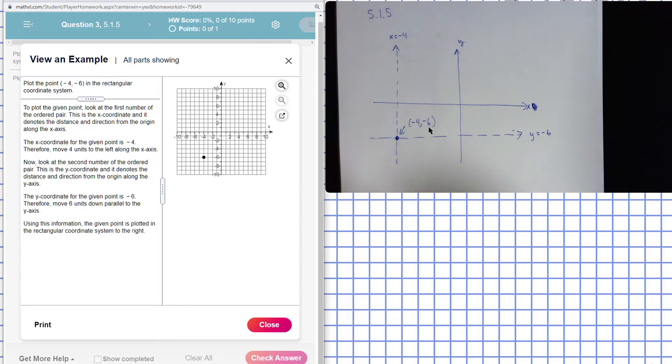The second number is the y-coordinate, and the line here represents all the points where the y-coordinate is equal to negative six. Where these two lines cross, the intersection here is the point negative four, negative six. So that's the location of the point there.